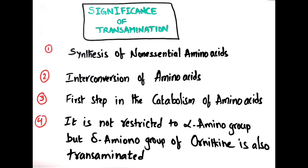Transamination also plays a role in the catabolism of amino acids. Whatever proteins we take in the diet are digested and converted into amino acids, which are then utilized by the cell. During catabolism, the amino group must first be removed from the amino acids, and this removal requires two mechanisms: the first is transamination and the other is deamination. Transamination is thus the first step in the catabolism of amino acids.